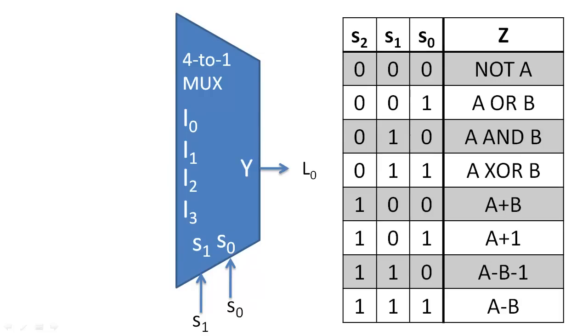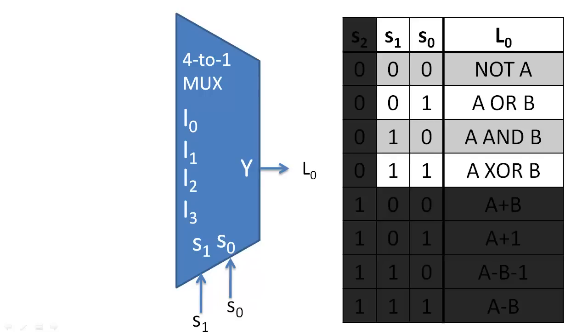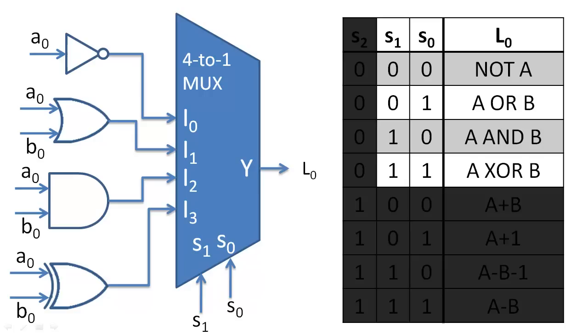We can use this 4 to 1 multiplexer to create our logic unit. When S2 is 0, we simply need to use S1 and S0 to select which operation to perform. We implement the logic unit by pairing each operation with the data input that matches the binary encoding of the selection inputs.